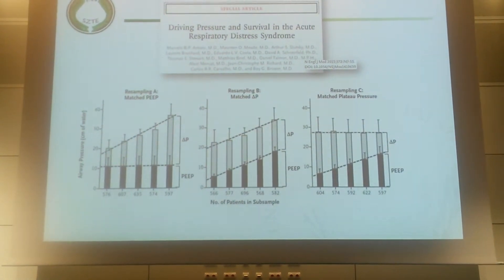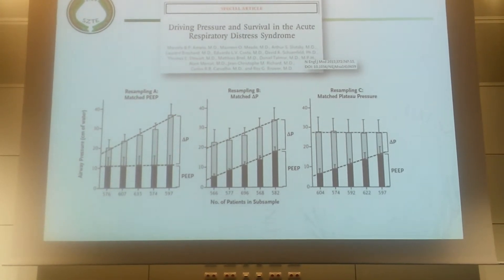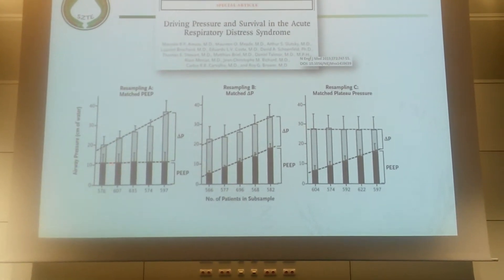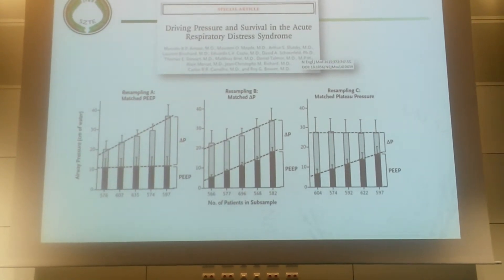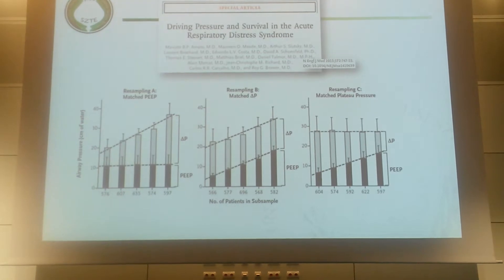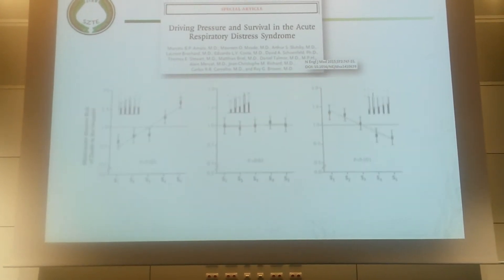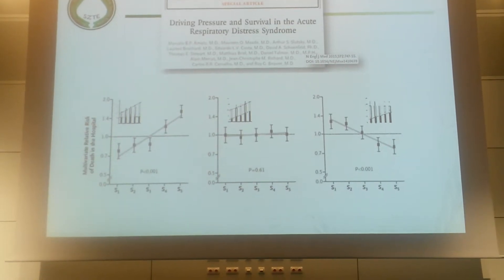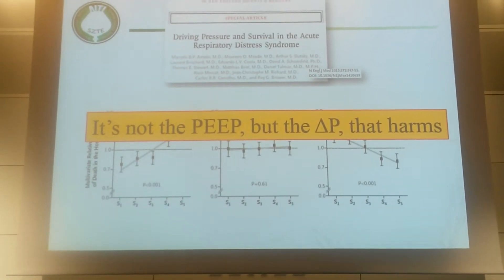In this paper published two years ago, the authors collected data from large ARDS trials and created three subgroups with different ventilation strategies. In the first subset, PEEP was constant and driving pressure was increased gradually. In the second, driving pressure was constant and PEEP was increased. In the third, peak pressure was constant and driving pressure decreased toward the end. When they looked at mortality, they found it was not PEEP per se that harmed patients, but driving pressure which had a significant relationship with mortality. The message: it's not the peak pressure but the delta pressure — the driving pressure — that we must pay special attention to.